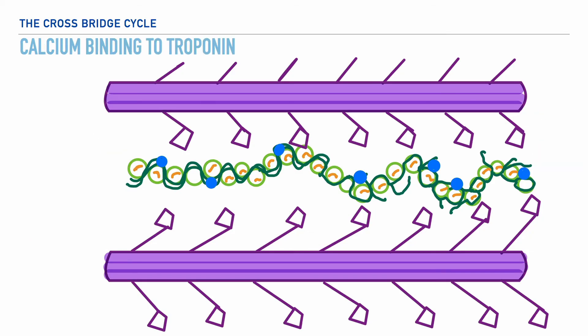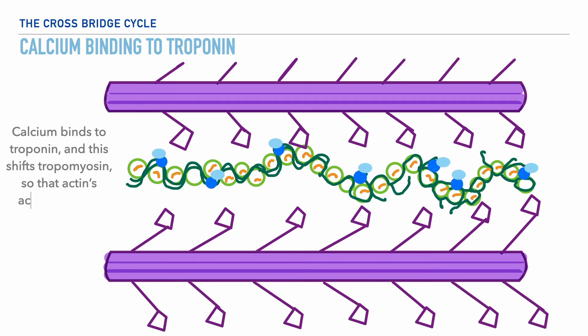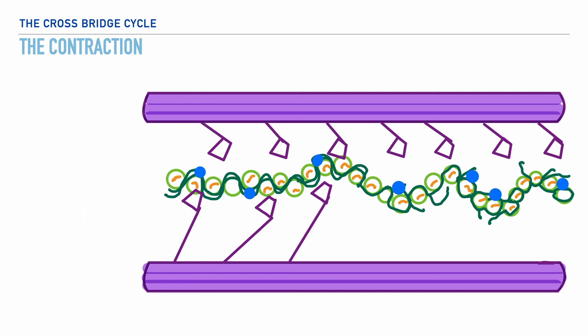Going back for just a moment, we've had the release of calcium from the sarcoplasmic reticulum, and what we'll see is calcium binding to troponin. It's this action that leads to the shift of tropomyosin so that actin's active sites are exposed. This means that initially tropomyosin was covering actin's active sites. Now that the active sites on actin are exposed, the myosin heads are able to attach to it, and this forms what we call a cross bridge.